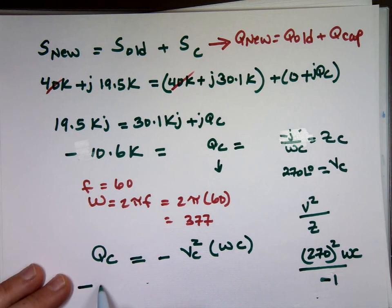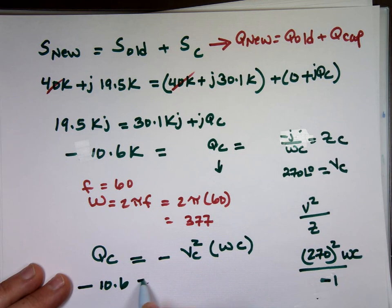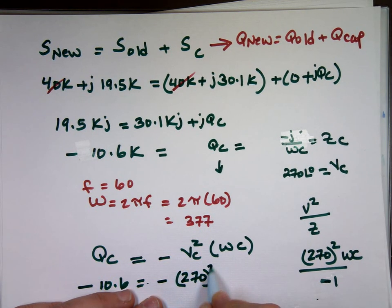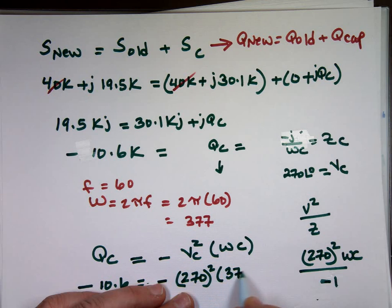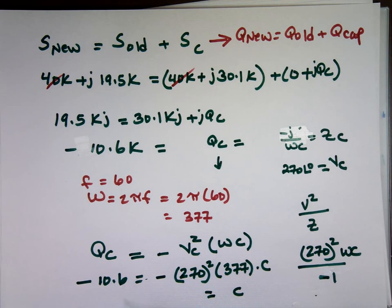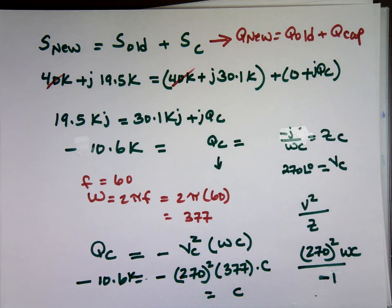So that's where the minus sign. So negative 10.6 equals negative, what was it, 270 squared times 377 times C. Can I find what C is? That's a K here. I forgot to write the K. 10.6 K. I forgot to turn it on.